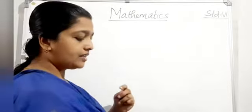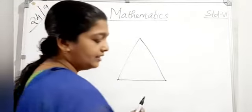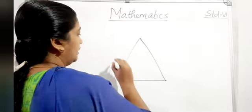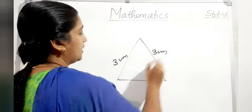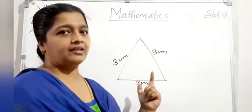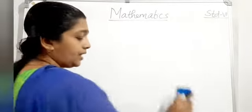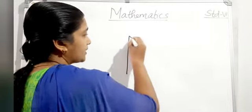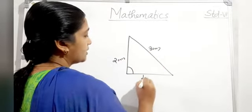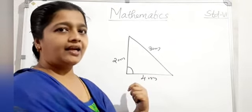We can classify triangles on the basis of both sides and angles. For example, a triangle with sides 3 cm, 3 cm, and 3 cm — three equal sides — is an equilateral and acute angled triangle. A triangle with sides 2 cm, 3 cm, and 4 cm — three unequal sides — is a right angled and scalene triangle.